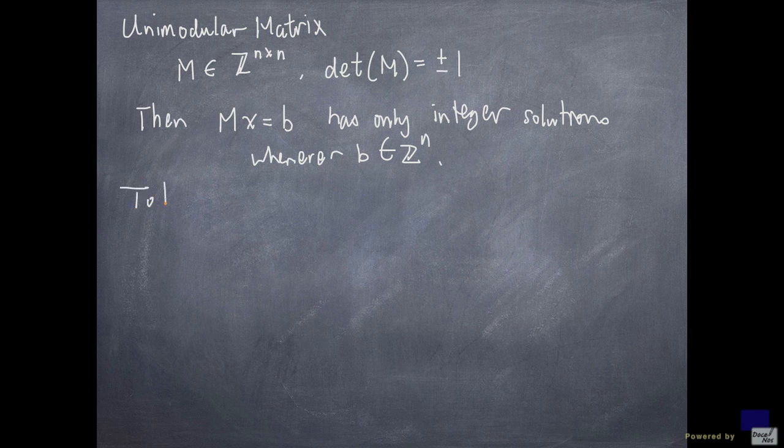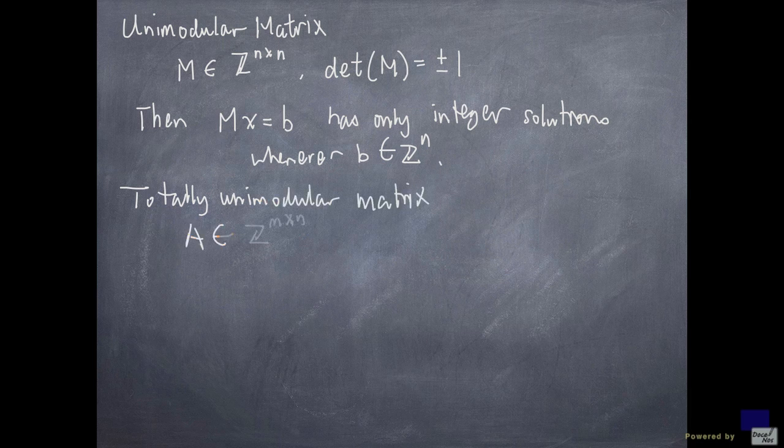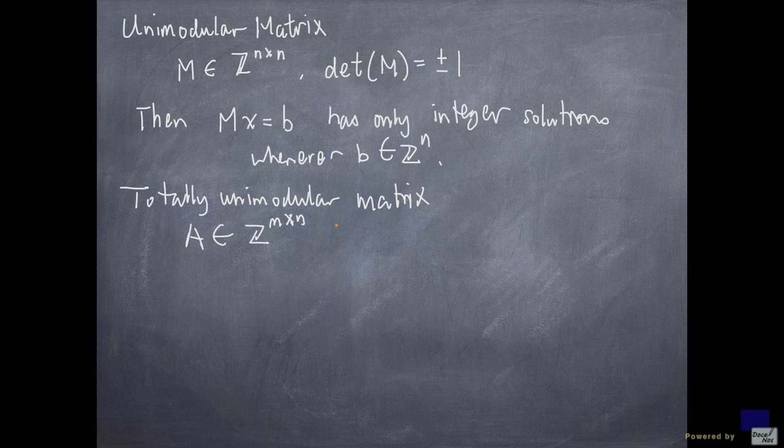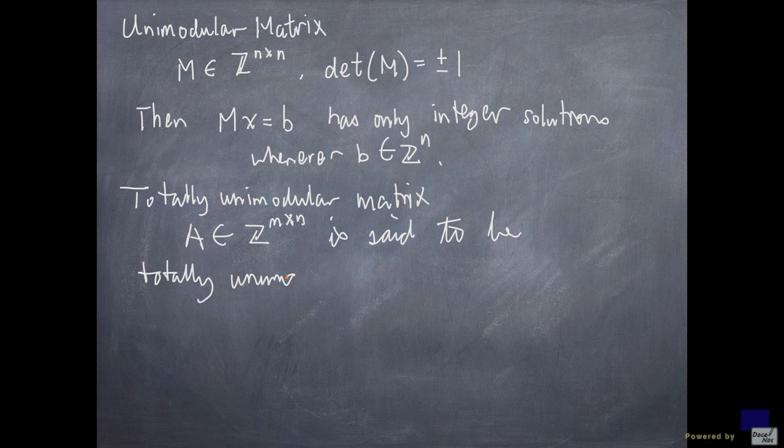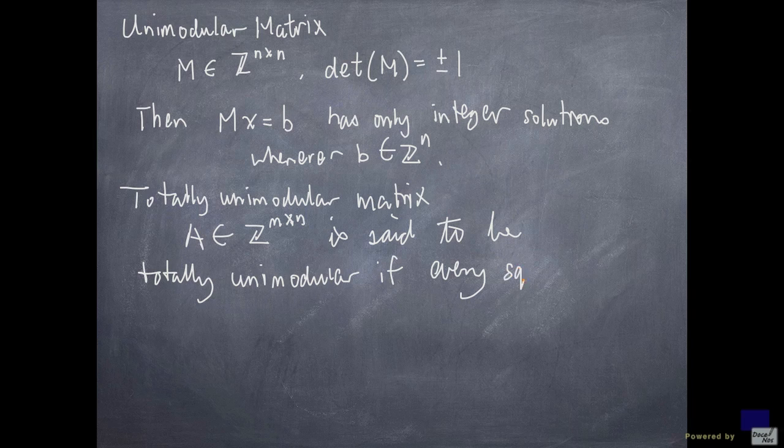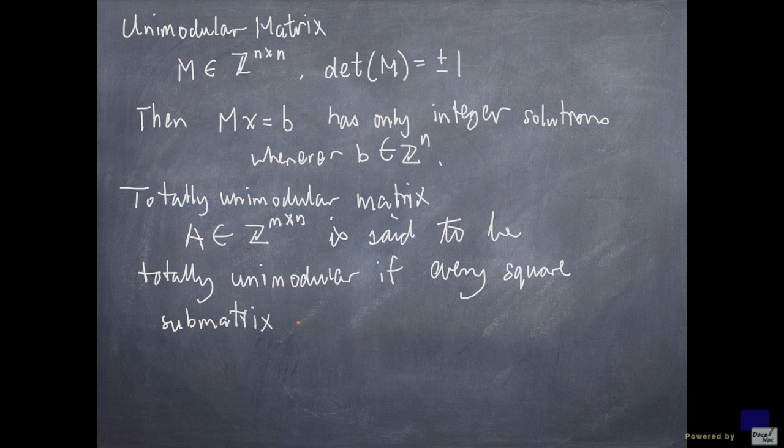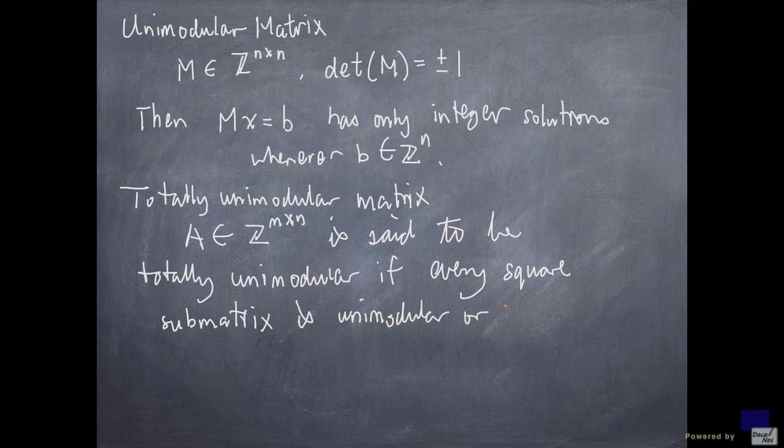There's another notion called totally unimodular matrix. So A, an n by n integer matrix, is said to be totally unimodular if every square submatrix is unimodular or singular.